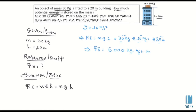Kilogram meter per second squared is a Newton. This is mass times acceleration. This is a Newton. Potential energy is equal to 6,000 Newton meters.